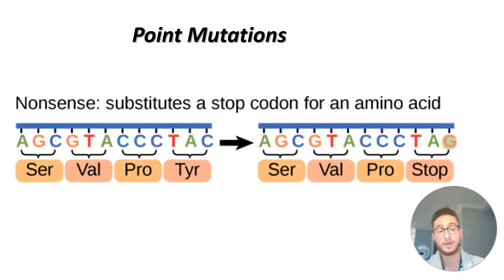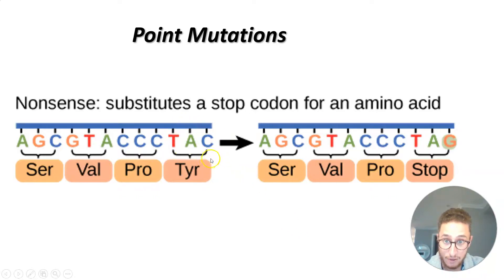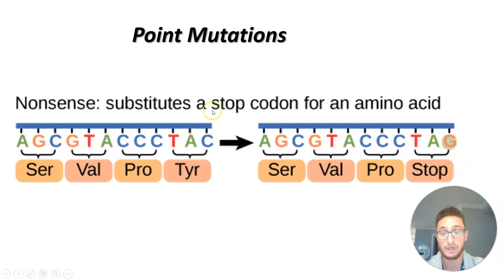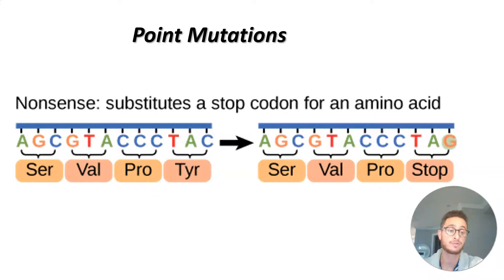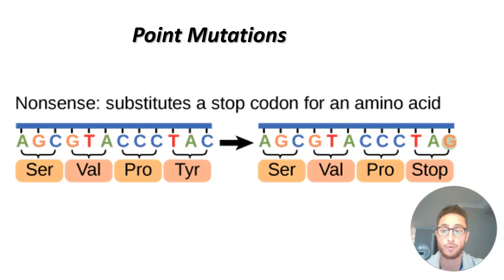Our third type is called a nonsense mutation. This codon, TAC, has now been changed to TAG — and that is a stop codon. So where we used to have tyrosine, now suddenly we have the end of our protein. A premature stop is going to have a much more deleterious effect on that protein — you're going to end up with some short version of what was otherwise a functional protein. We call this a nonsense mutation, and it's more likely to cause that protein to stop working.